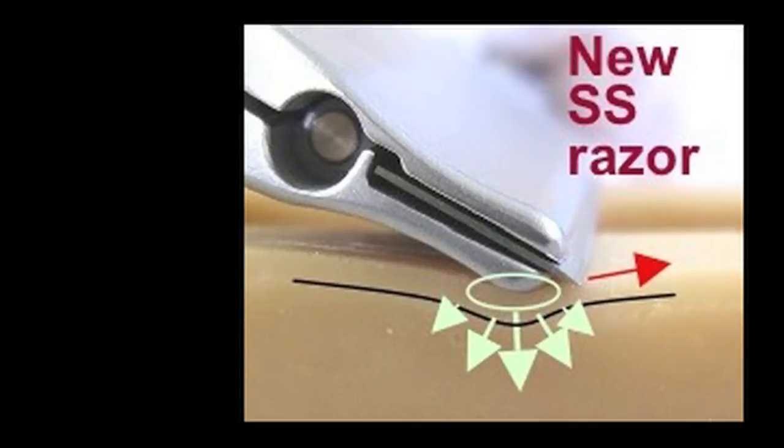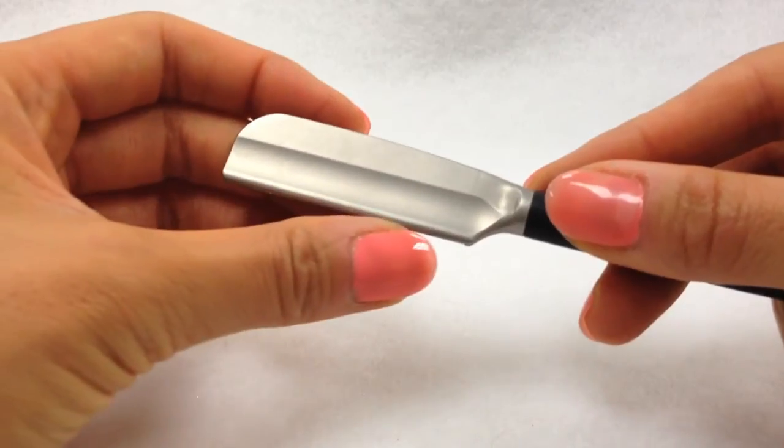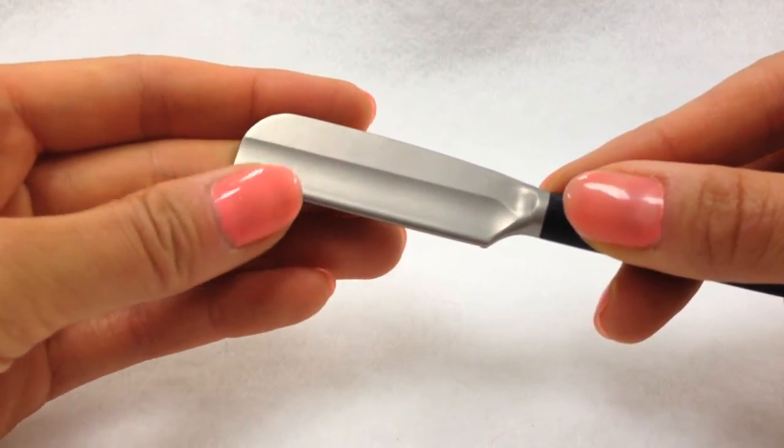The rounded shaving head pushes down the skin, raises the hair follicle, and allows you to get a closer shaving experience. The rounded tip also makes for a less damaging shaving experience.